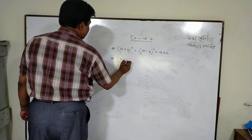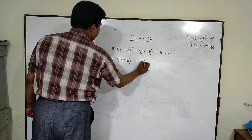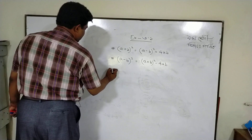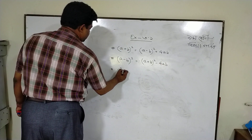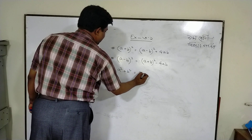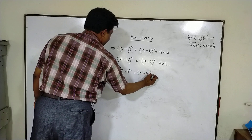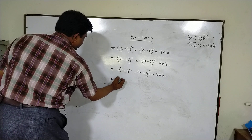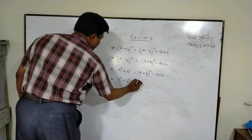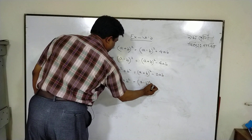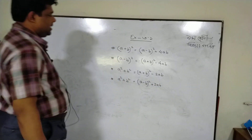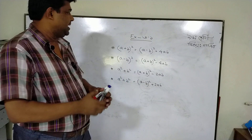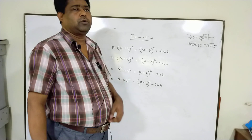We are going to write down: a minus b whole square plus a plus b whole square minus 4ab. We are going to write down: a square plus b square plus a plus b whole square minus 2ab. Now: a square plus b square plus a minus b whole square plus 2ab. This is the most important part.